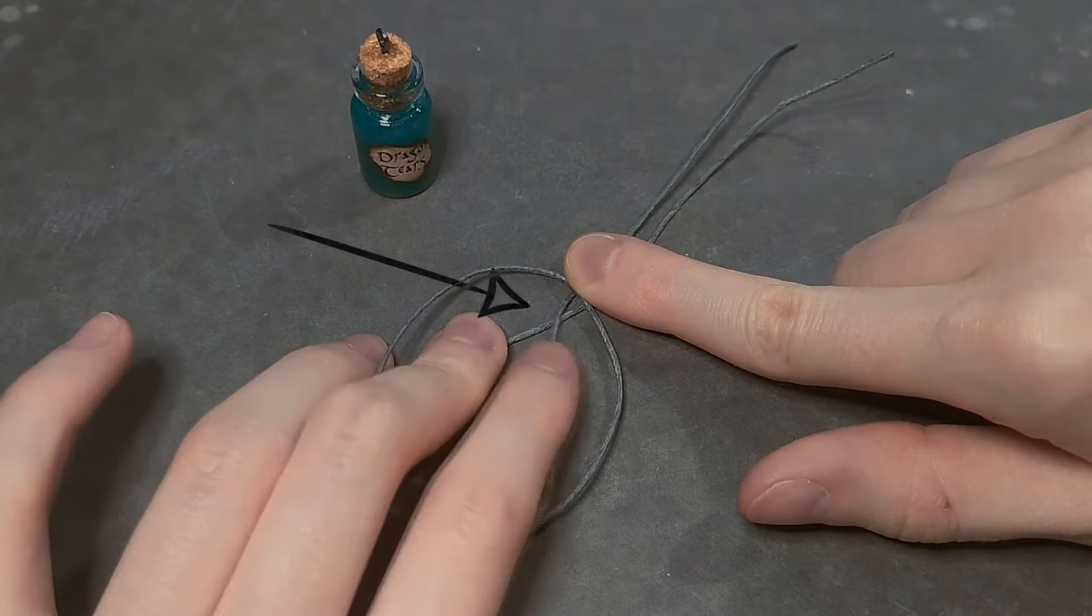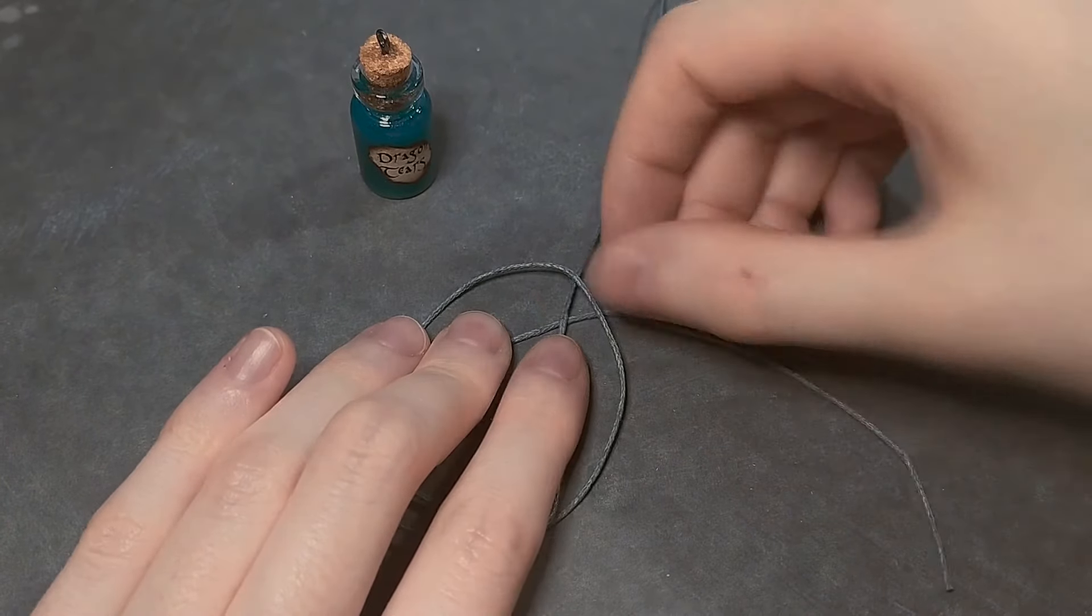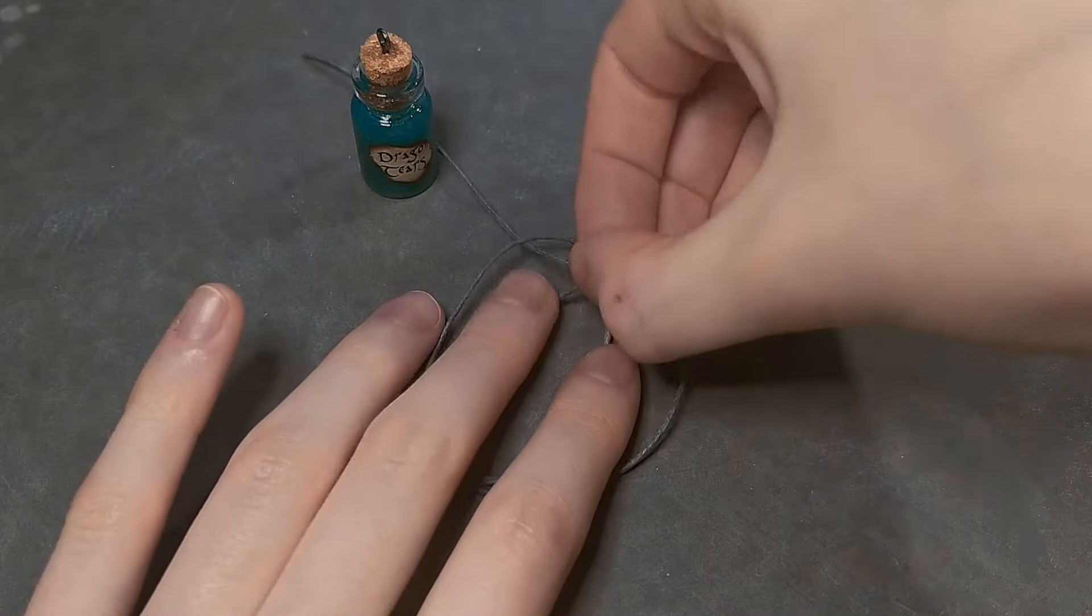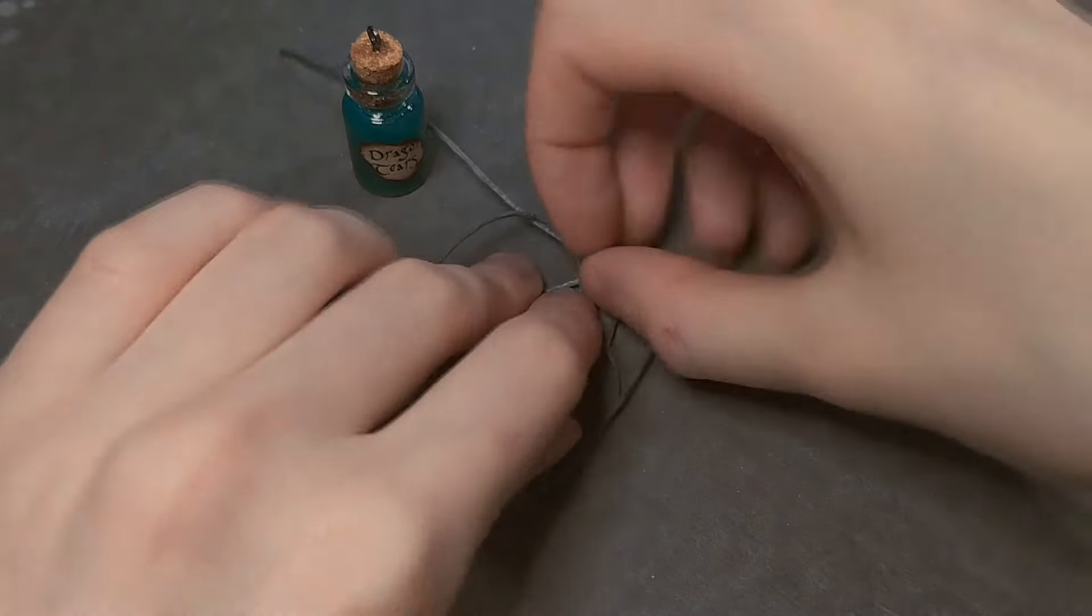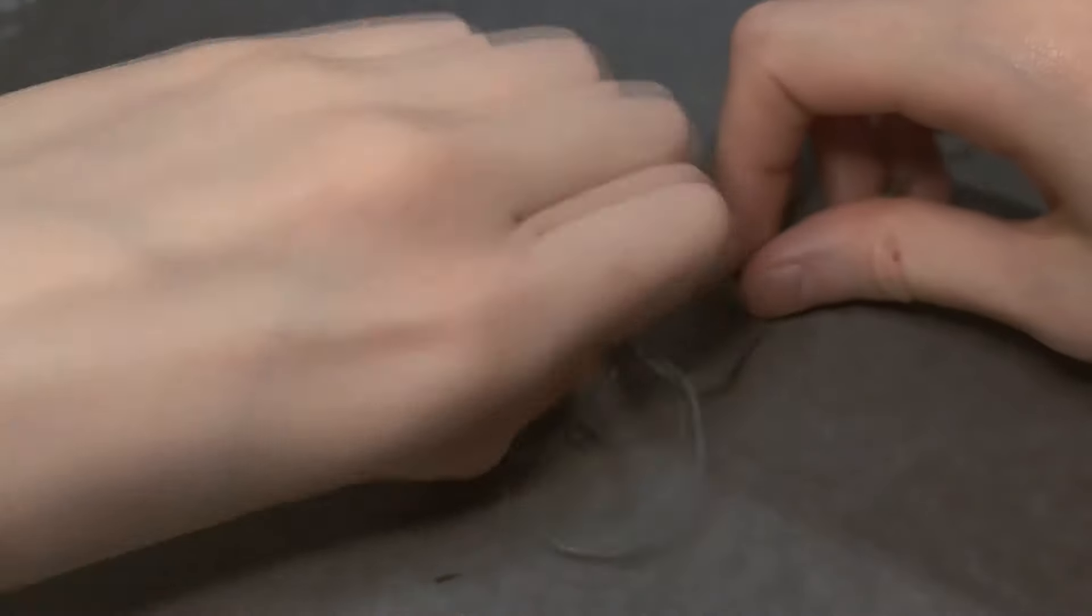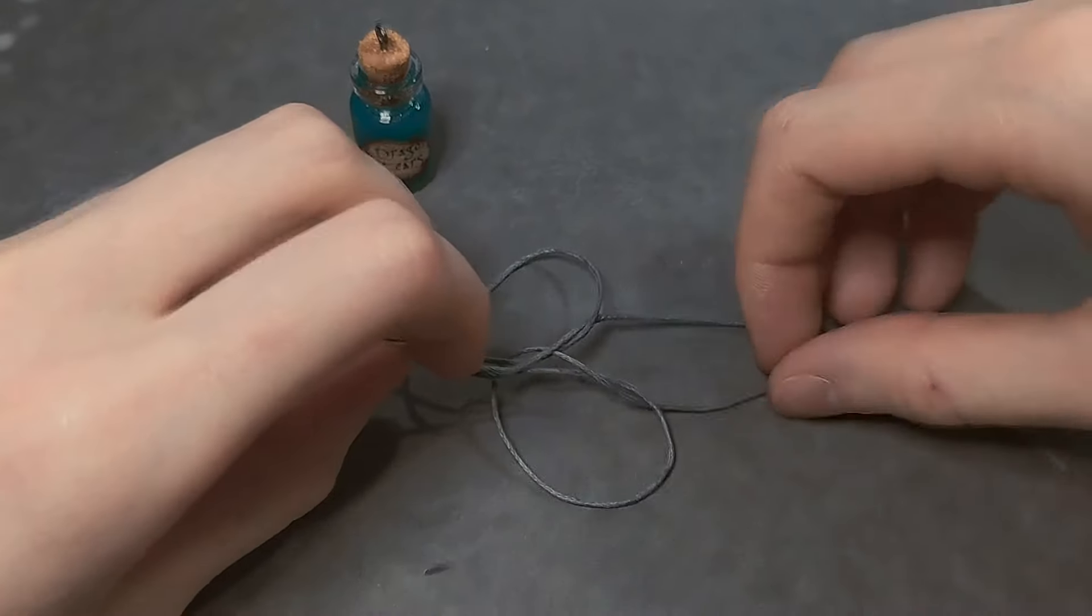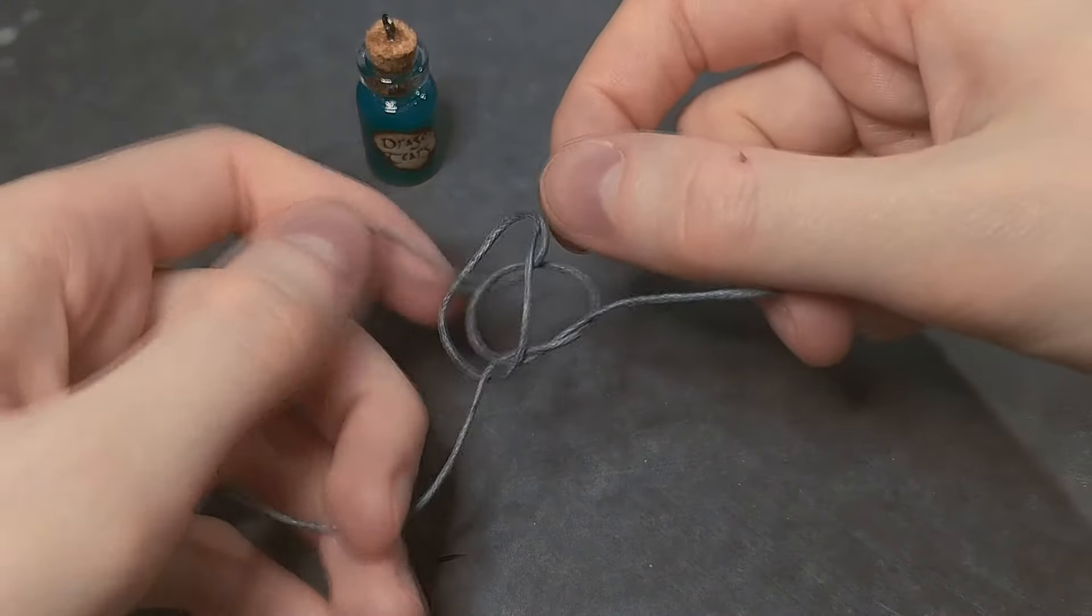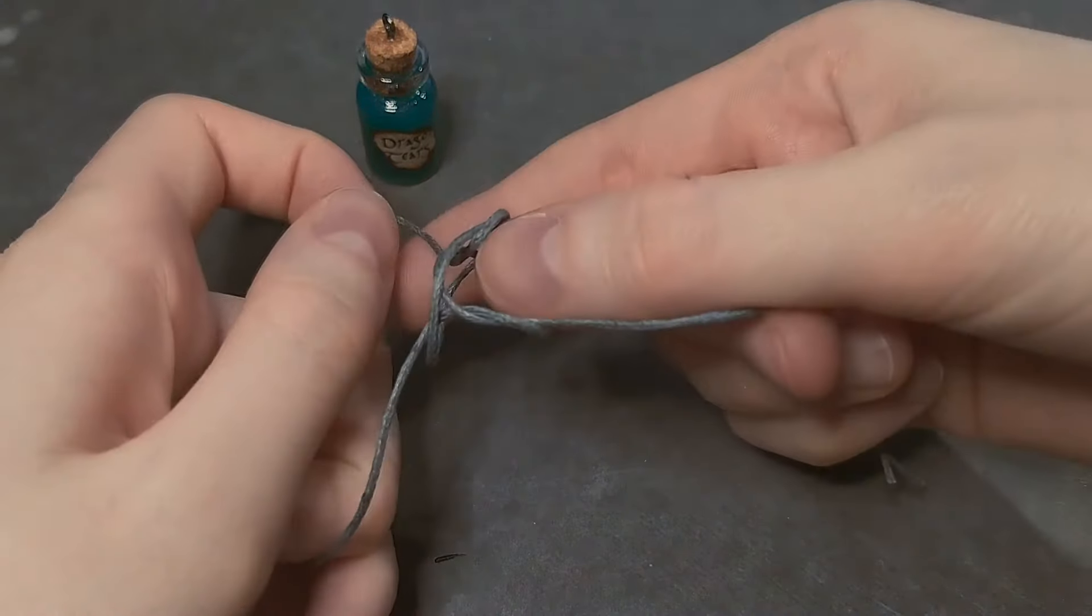Here in this place you should get a cross. You need to pass cord through it like this, holding the loose ends. And pull. The cord should be straightened and it will turn out like this.